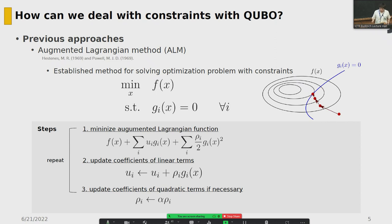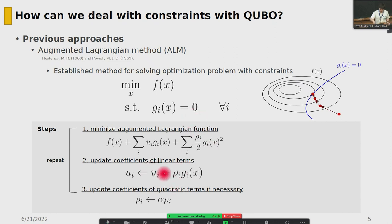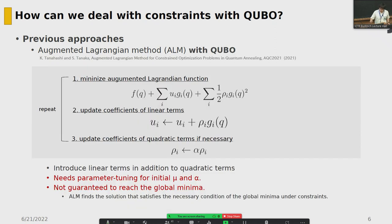First, minimize the augmented Lagrangian function, which introduces a linear term and a quadratic term. Then update the coefficient of the linear terms, which depends on the low_i, the coefficient of the quadratic term. We then update the coefficient of the quadratic term if necessary — one naive approach is to multiply by some ratio alpha. This method is driven by continuous variables.